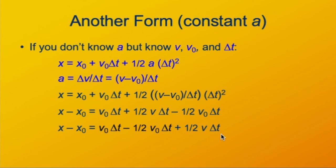We can simplify the two terms in v₀Δt and we end up with one half v₀Δt plus one half vΔt. We can combine that slightly factoring out the one half and we get one half times the sum of v₀ plus v times Δt.